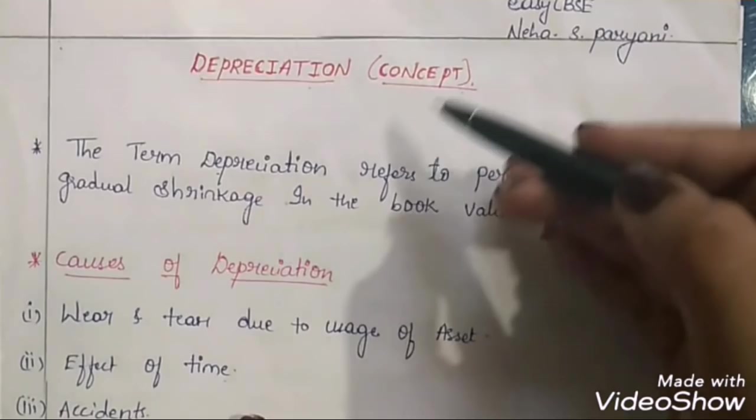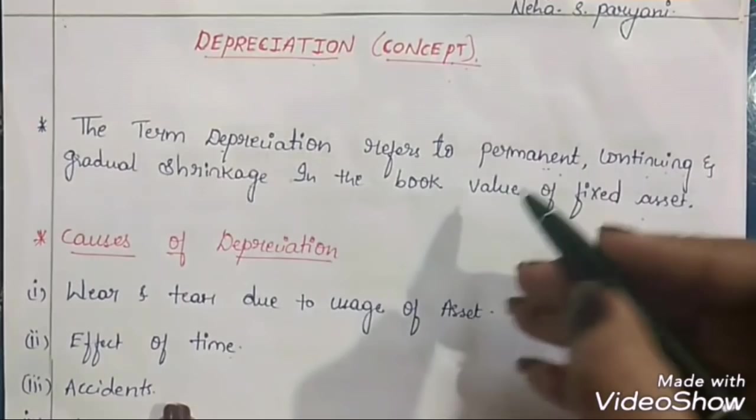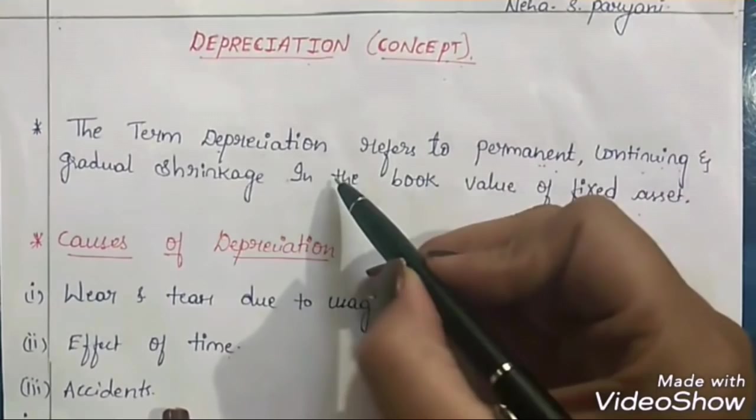The term depreciation refers to permanent, continuing and gradual shrinkage in the book value of a fixed asset. It means that depreciation refers to the continuous reduction in the book value of the fixed asset.